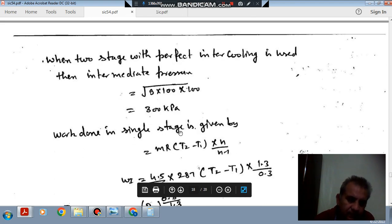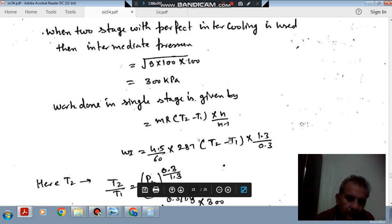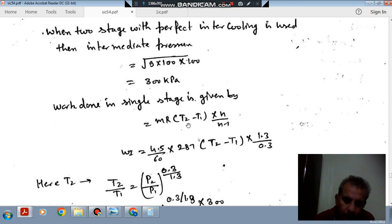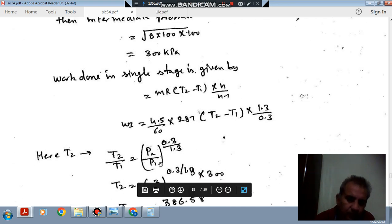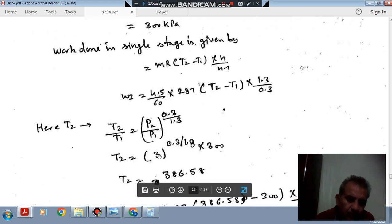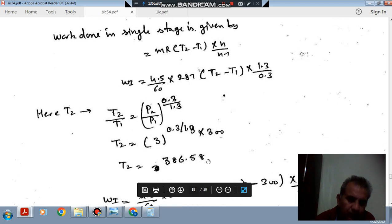Work in single stage is given by MR(T2 minus T1) times N divided by N minus 1. M is 4.5 by 60, R is 287, T2 minus T1 is not known, N is 1.3. Now T2 by T1 equals (P2 by P1)^0.3 by 1.3. P2 by P1 is the pressure ratio in the first stage.